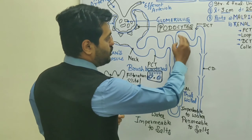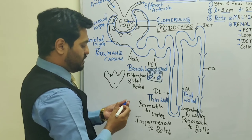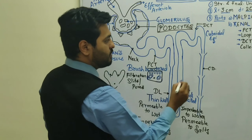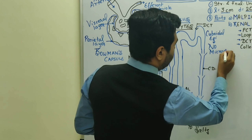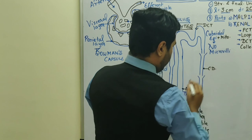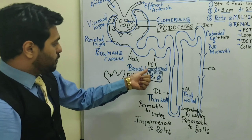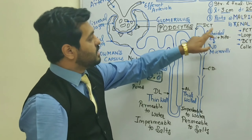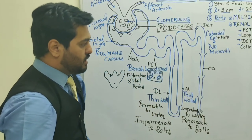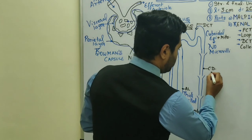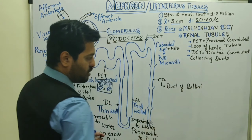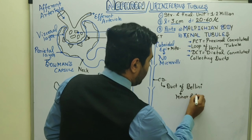The ascending limb continues into the DCT — distal convoluted tubule. DCT cells also contain cuboidal epithelium but have no microvilli, so brush border is absent. However, mitochondria are present, though in lesser quantity than in PCT, meaning DCT can also perform active transport. Finally, the collecting ducts open into the renal pyramids and form the duct of Bellini. Many collecting ducts form the duct of Bellini, which opens into the minor and major calyx.